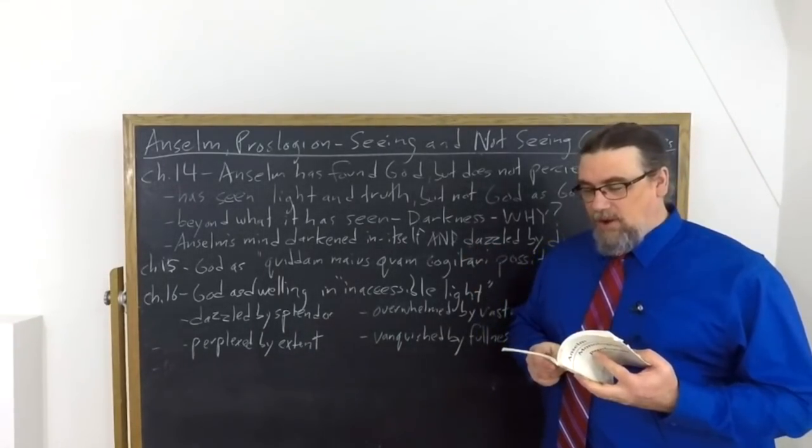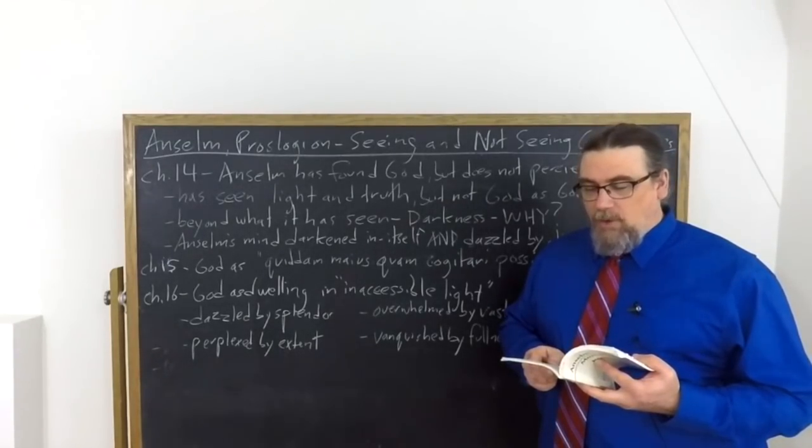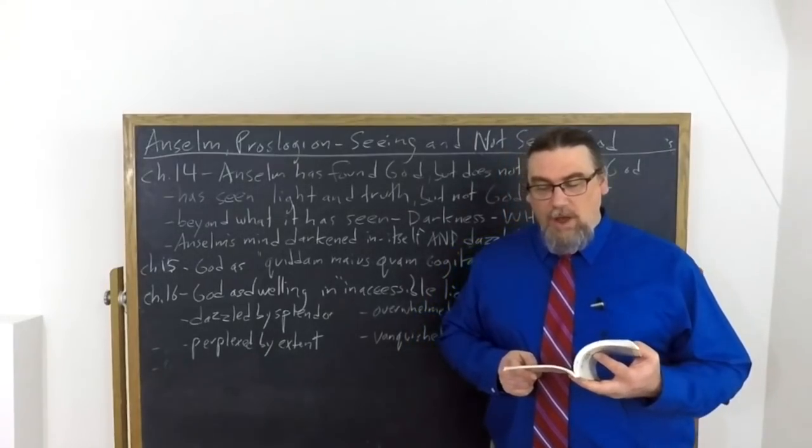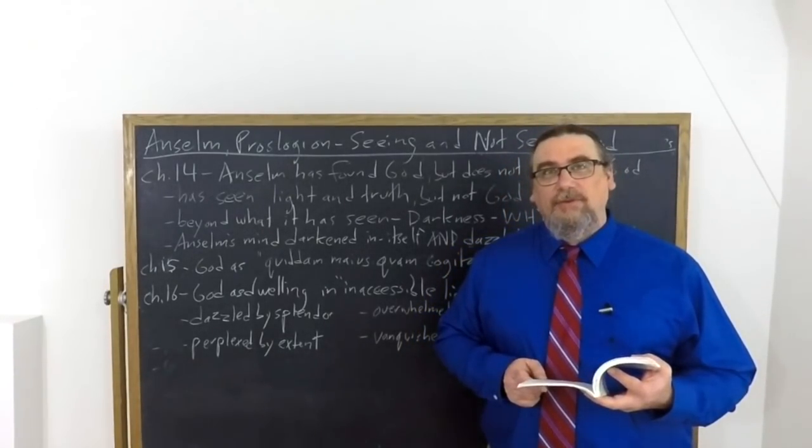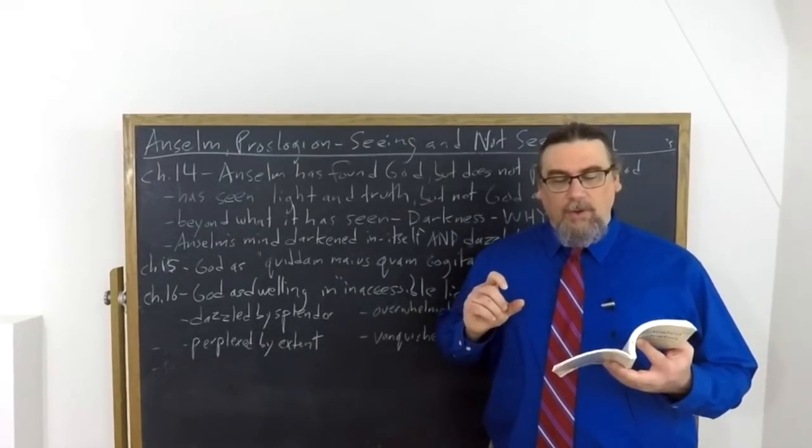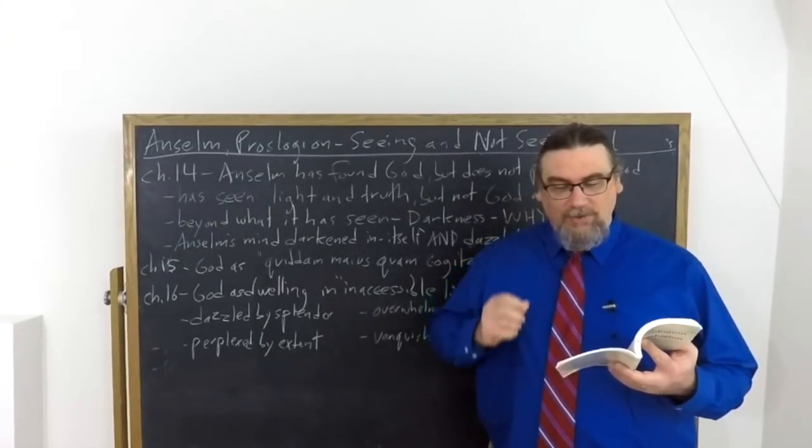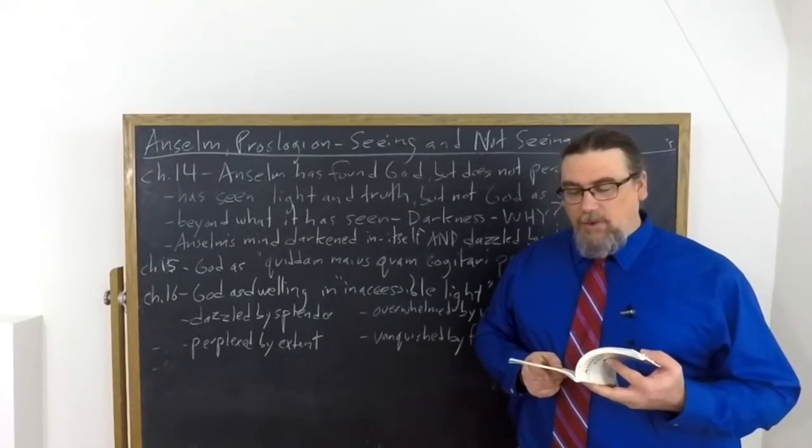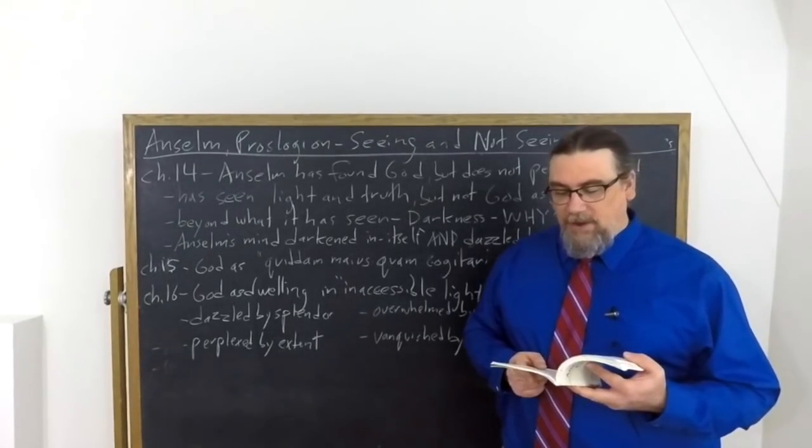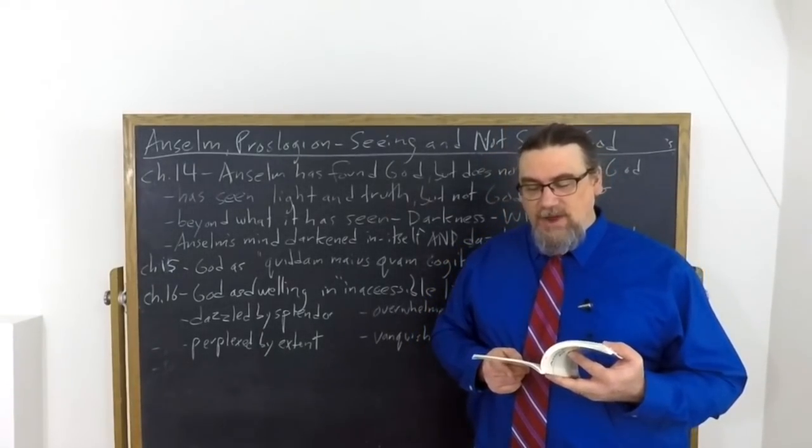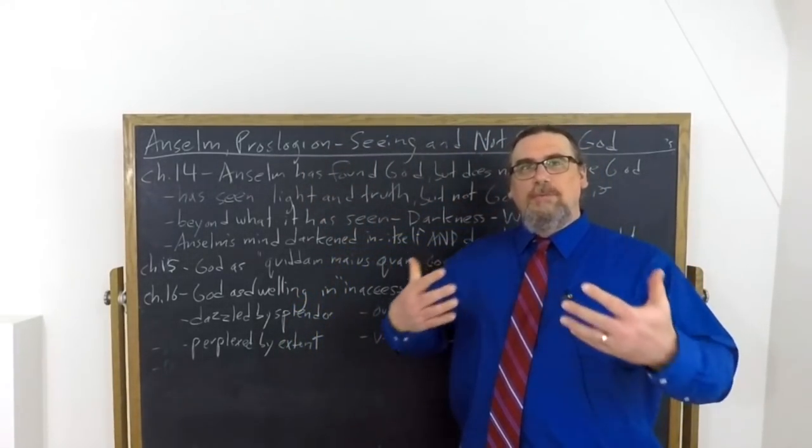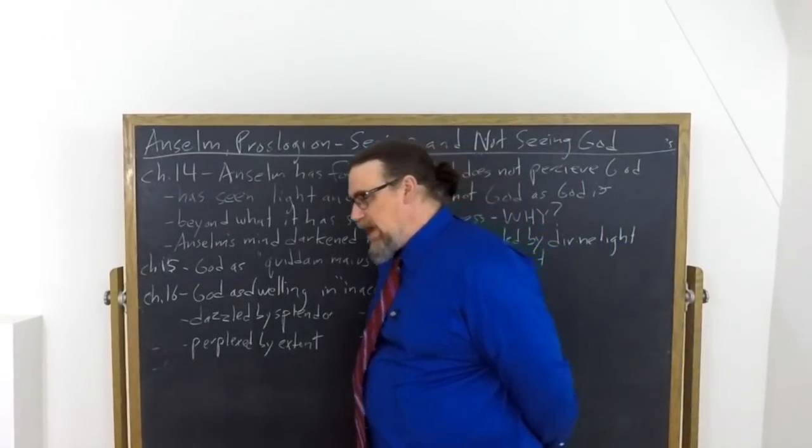Their eyes of the mind could still be overwhelmed by the superlative or supreme illumination coming from the divine light. So it could be weakness on the side of the perceiver, and it could be that what is being perceived is just too much for that perception. Anselm takes both of these to be the case. So he says, is my eye darkened by its own infirmity or is it dazzled by its splendor? Surely it's both darkened in itself and dazzled by you. It is obscured by its own littleness and overwhelmed by your vastness.